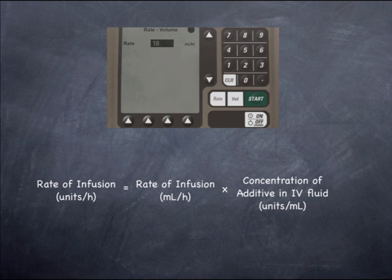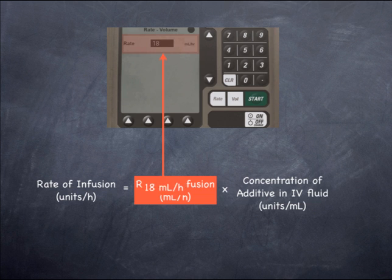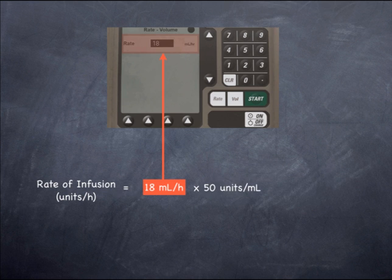Consider the infusion pump shown, which shows the current rate of infusion of the IV fluid as 18 mils per hour. Based on this infusion rate in mils per hour, and the IV fluid order on the previous page, the rate of infusion of heparin in units per hour is 18 mils per hour multiplied by 50 units of heparin per mil, which gives 900 units per hour.